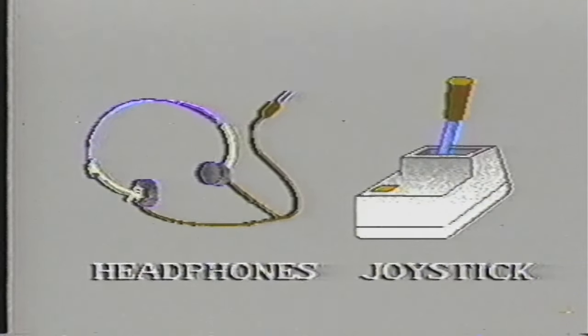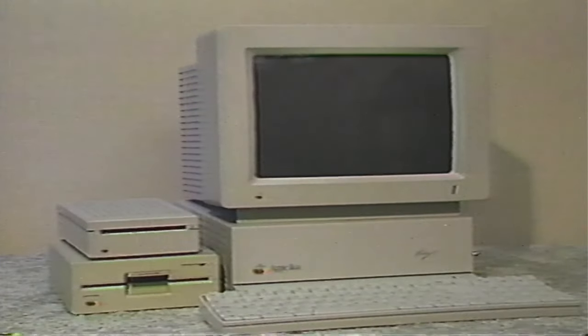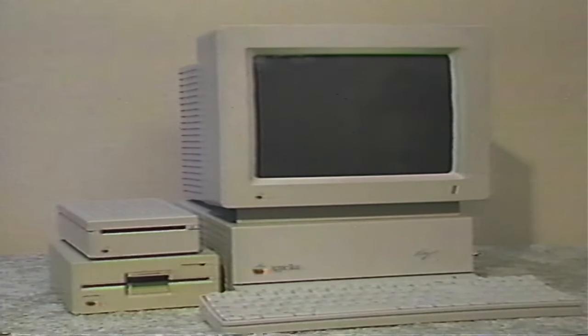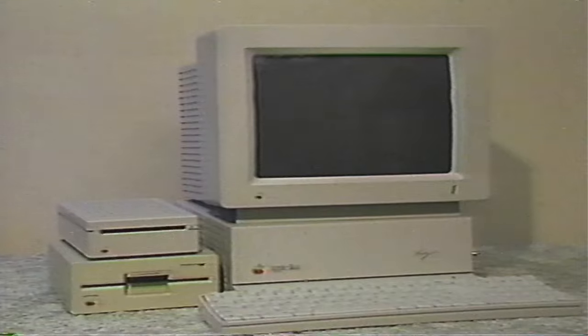If you would like to learn more about them, refer to your manuals for more information. It's important to understand how your computer system works to get the most out of it. A computer system uses two types of peripheral components, which are known as input and output devices. Input devices get information into your computer, and output devices are used to get information from your computer, usually in a form that is readable by you.